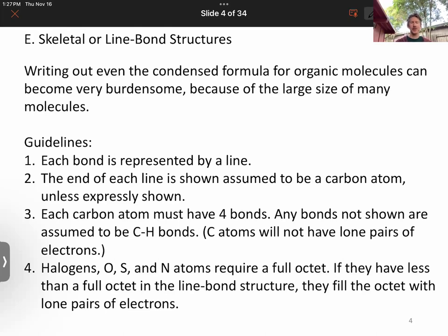The guidelines here are: each bond is represented by a line. The end of each line shown is assumed to be a carbon atom. Each carbon atom must have four bonds. Any bonds not shown are assumed to be carbon-hydrogen bonds, because carbon atoms will not have lone pairs unless we show it, but we won't in this class. Halogens, oxygen, sulfur, and nitrogen atoms require a full octet. If they have less than a full octet, they fill the octet with lone pairs that are oftentimes not shown.